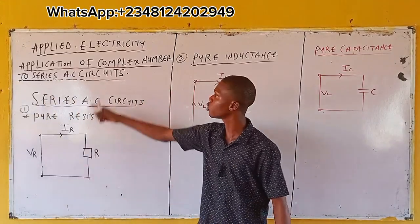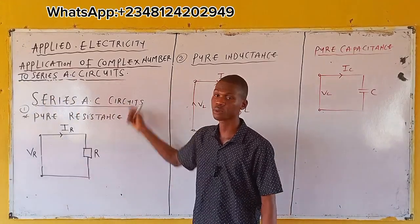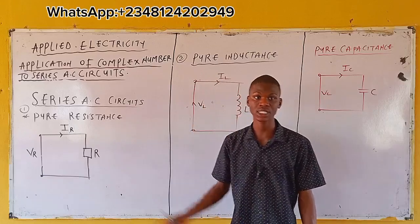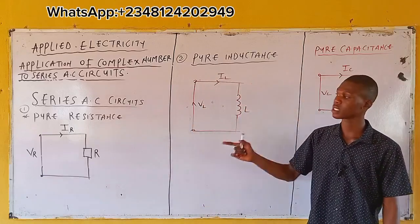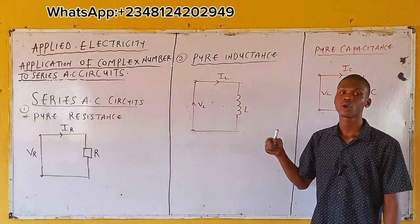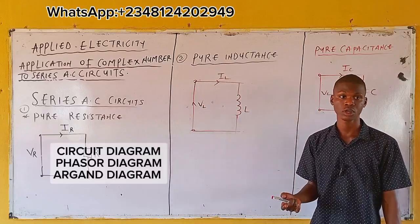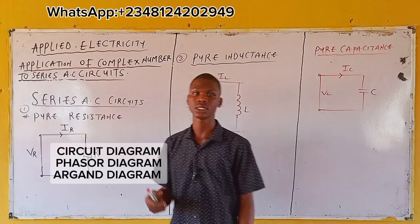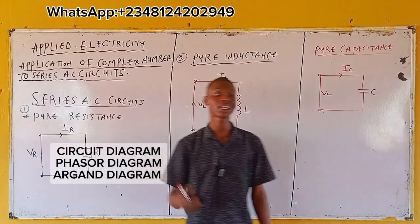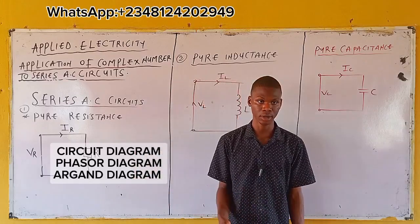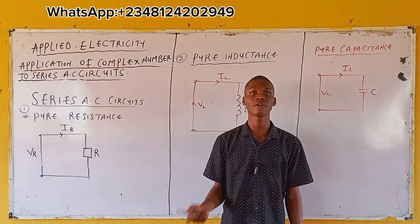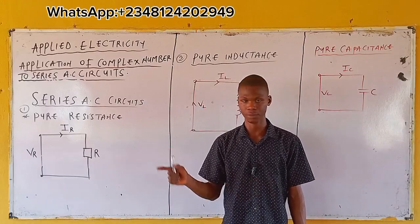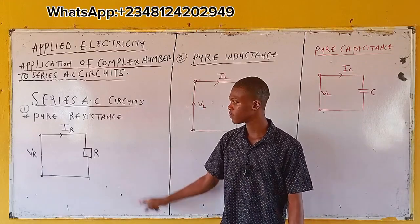What we need to take note of here is that we want to look at the circuit diagram itself, then we'll be looking at the phasor diagram, and then the Argand diagram — meaning once we've gotten our values, how do we plot them on the Argand diagram?